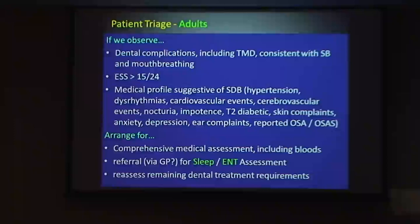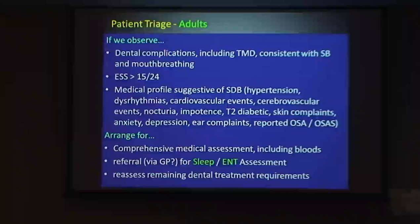With adults, again I want my three things: dental complications — there might be TMD this time — my Epworth score, and a medical profile suggestive of sleep-disordered breathing. If I get all three red flags, the first thing I'll do is request blood tests — to rule out any internal bleeding, low iron, folate, or B12. People won't tell you they've got a bad haemorrhoid or blood in their stools for 12 months. Stomach cancer and bowel cancer will manifest in dental problems.